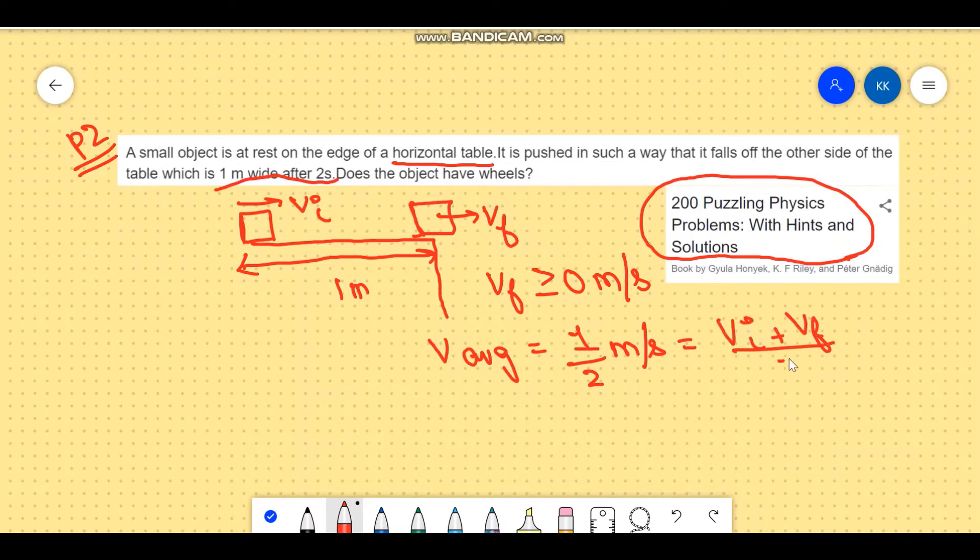We also know that the final velocity at the minimum can be zero. So if we take the minimum value of the final velocity, we get the maximum value of our initial velocity. Using these conditions, the two get cancelled out. We are taking the final velocity to be zero.